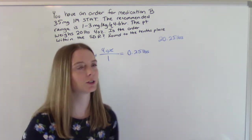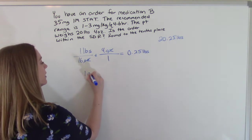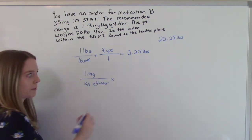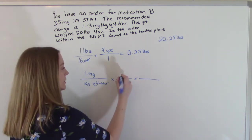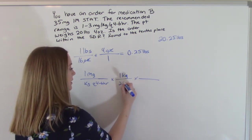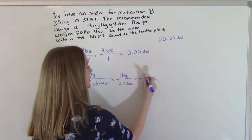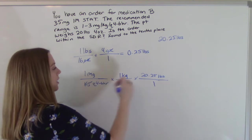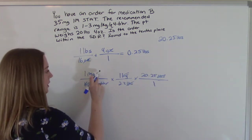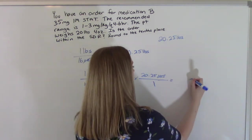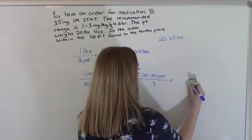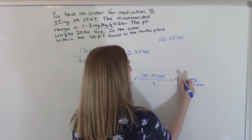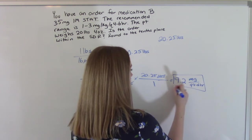So we have 20.25 pounds. Now we can actually do our safe dose range. So we'll start with one milligram per kilogram Q four to six hours. This will be our minimum. We have to do our converting factor of kilograms to pounds. And then our patient weighs 20.25 pounds. So our kilograms will cancel. Our pounds will cancel. That'll leave us with milligrams over Q four to six hours. And then we get 9.2. So this is our minimum.